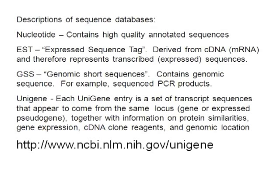The Genomic Short Sequences (GSS) database contains genomic sequence. For example, if people were to sequence PCR products, they might put them into the GSS database. A number of tomato sequences from validation studies were put into the GSS database, so that's also a resource for looking for single nucleotide polymorphisms through comparisons.